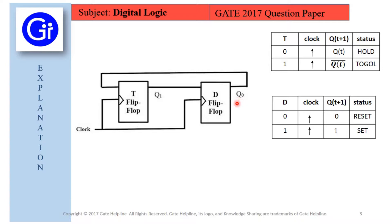First we will see the truth tables of both T and D flip-flops. For the T flip-flop, T is the input, clock is the clock input, and QT+1 is the next state. For T=0 and clock high, it results in QT, meaning it holds the state. For T=1 and clock high, it toggles — giving QT bar. For the D flip-flop, input 0 with high clock results in 0 (reset), and input 1 with high clock results in 1 (set).